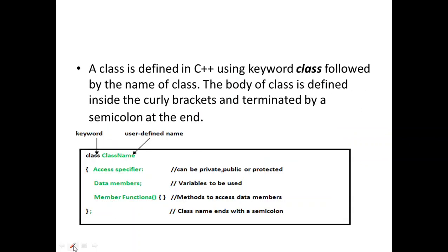The class is a user-defined data type and the keyword is 'class', followed by a class name which is user-defined. Within a class, there will be some access specifiers — we can declare our data members and member functions as private, public, or protected, which is absent in procedural-oriented programming. Data members are the variables to be used, and member functions are the methods to access them. The class name ends with a semicolon.